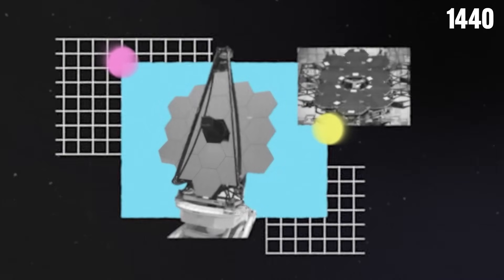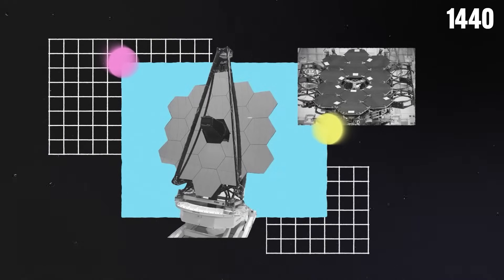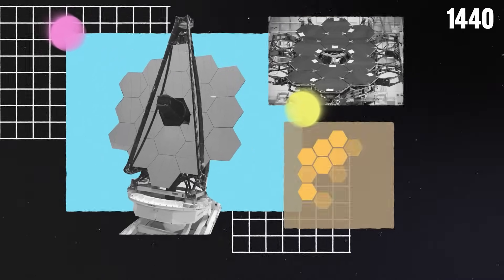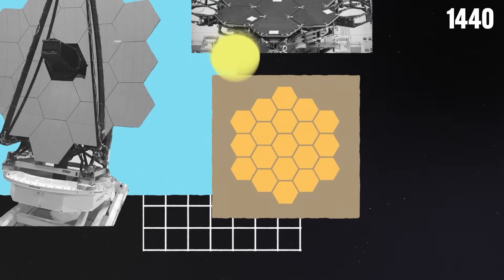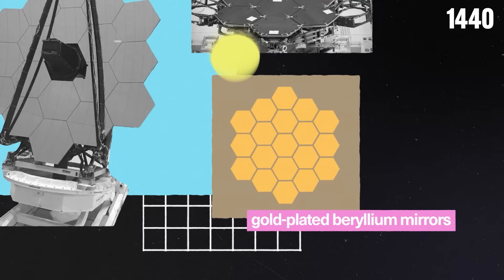Not only does Webb's space telescope capture moments from the past, but its observing surface is a marvel of engineering. 21 feet across with a honeycomb shape made of 18 hexagonal gold-plated beryllium mirrors, this makes it six times larger than the Hubble's.